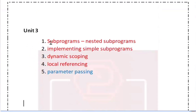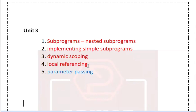If you look at sub-programs, nested sub-programs, then implementing simple sub-programs — if you look at the first two topics, then dynamic scoping and local referencing. If you look at the four questions, parameter passing is also important.